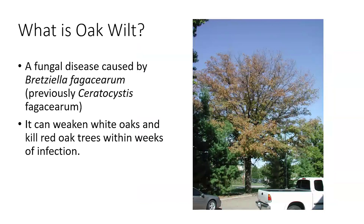So what is oak wilt? It is a fungal disease caused by a fungus called Bretziella fagacearum. I want to stress this is a fungus, not a bacteria. It can weaken white oaks and kill red oak trees within weeks of infection. Note the two different words: 'weakened' versus 'killed' — indicating different levels of severity for those two types of oak.